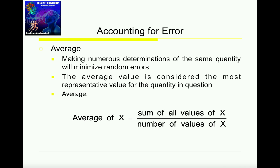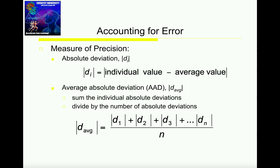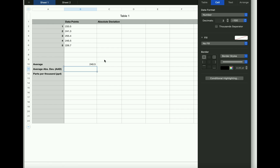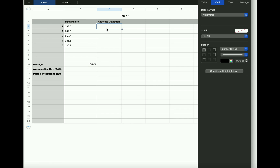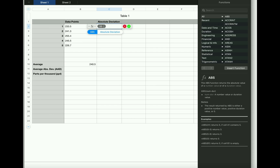So the average is really the simplest part of this. But in order to go to the next step, we already have to know the average. In the next step, we need to calculate what's called an absolute deviation. There's going to be an absolute deviation for every one of our data points. To calculate these absolute deviations, which are given by D, we take the absolute value of each individual data point — each individual value — minus the average that we just calculated. So if I want to calculate the absolute deviation, I need to calculate one for each of the data points.